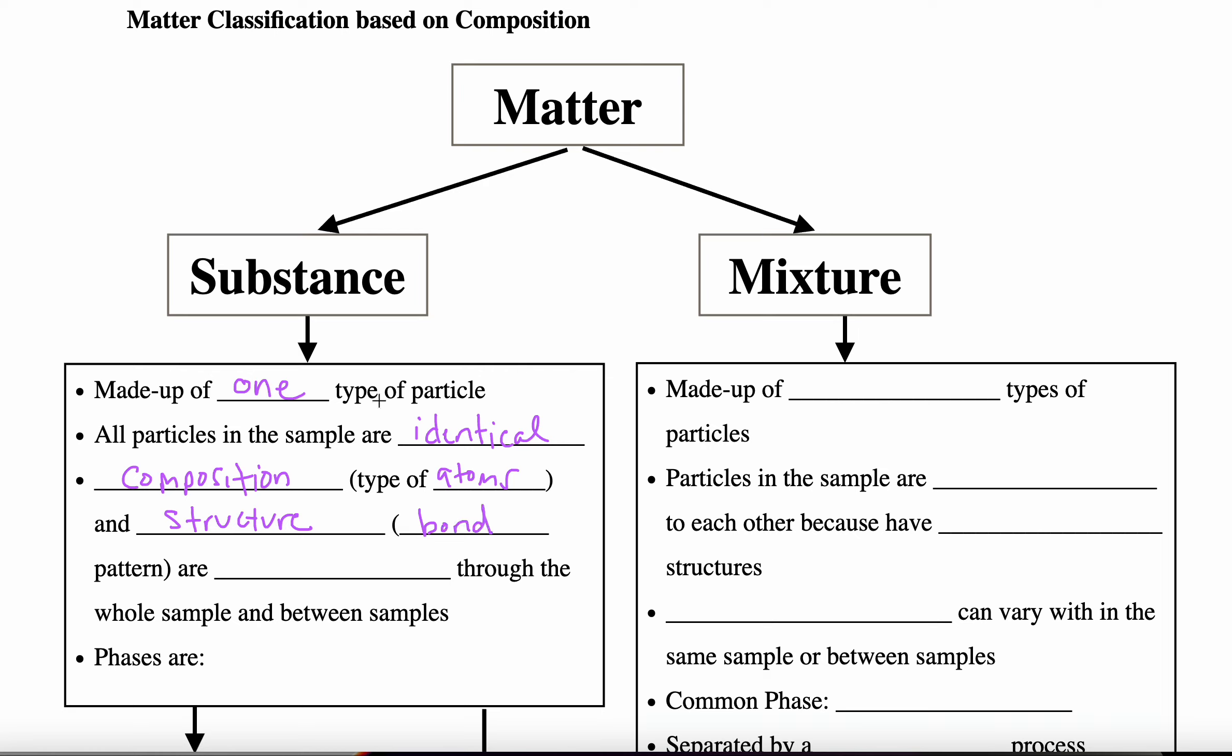So a substance is made up of one type of particle because all the particles are identical, not only in their composition, the type of atoms present, but their structure also. How the bonds are, how the atoms are linked together. And so the composition and structure are the same through the whole sample and between samples.